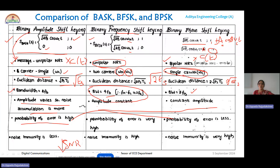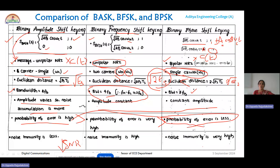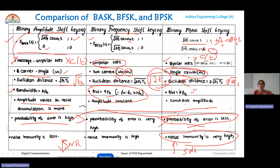The Euclidean distance for FSK is √(2Es), which is greater than ASK but less than PSK. Higher Euclidean distance means lower probability of error. So the ordering is: probability of error for ASK > probability of error for FSK > probability of error for PSK. Out of the three techniques, PSK has the lowest probability of error, highest noise immunity, and best SNR.